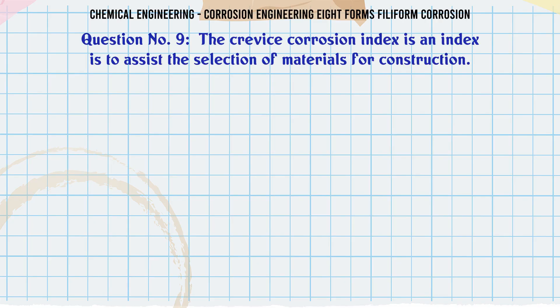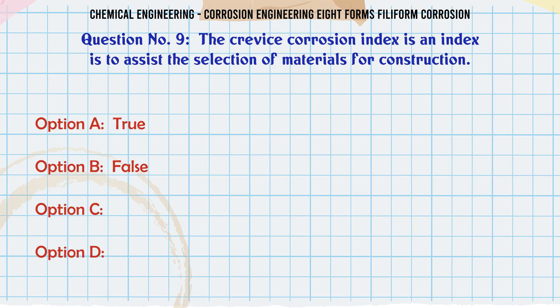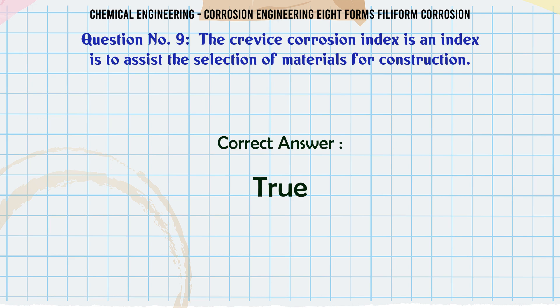The crevice corrosion index is an index used to assist the selection of materials for construction. a. True. b. False. The correct answer is: True.